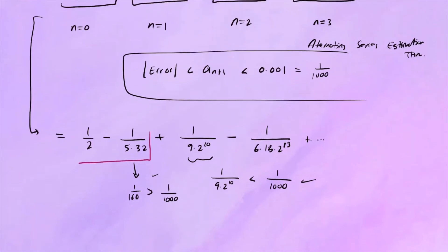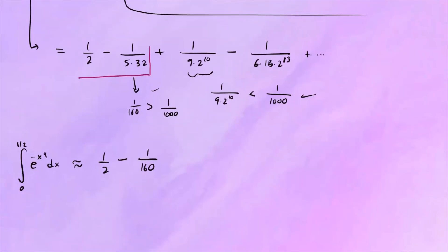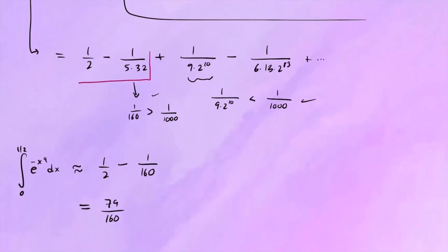So our integral is approximately 1 half minus 1 over 160. Putting them over a common denominator gives us 79 over 160, with an error of 0.001. So the integral from 0 to 1 half of e to the negative x to the 4th is approximately 79 over 160. I hope this helps. Take care.